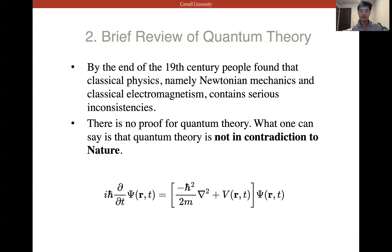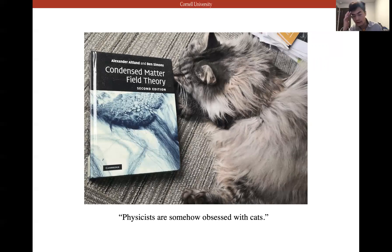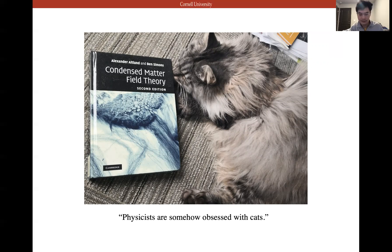When we reach the quantum scale, everything is not continuous — it is quantized. What is quantization? Physicists are somehow obsessed with cats, right? You've heard of Schrödinger's cat — the cat can be either dead or alive; it's a superposition of dead and alive.